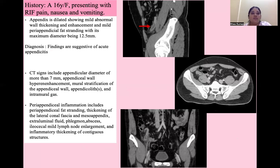The first case is a 16-year-old female presenting with right iliac fossa pain, nausea, and vomiting. The appendix is dilated and fluid-filled, showing mild abnormal wall thickening and enhancement with mild peri-appendiceal fat stranding, suggestive of acute appendicitis. CT signs of acute appendicitis include appendicular diameter of more than 7 mm, appendiceal wall hyperenhancement, mural stratification of the appendiceal wall, appendicoliths, and intramural gas. Peri-appendiceal inflammation includes peri-appendiceal fat stranding, thickening of the lateral conal fascia and mesoappendix, extraluminal fluid, abscess formation, lymph node enlargement, and inflammatory thickening of the contiguous structures.